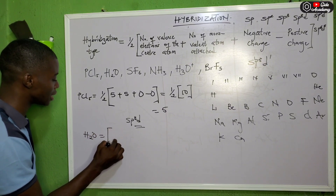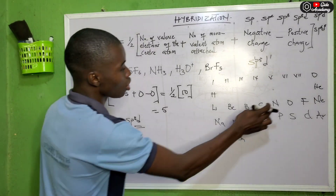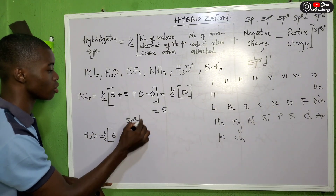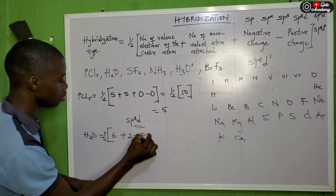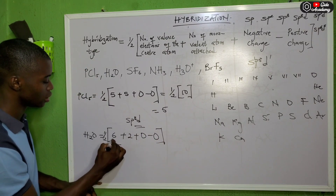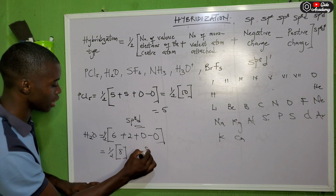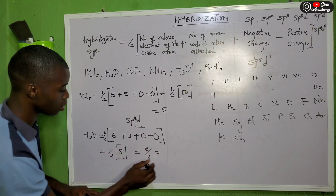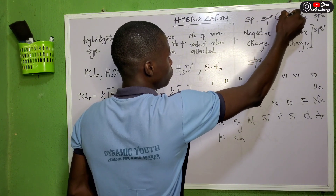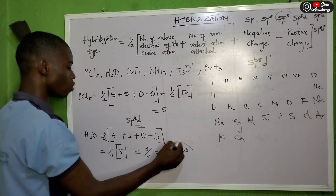Now let's try H2O. Oxygen is the center atom with 6 valence electrons. Two hydrogen atoms are attached. No charge. H = ½ × (6 + 2) = ½ × 8 = 4. Since sp3 accounts for 4 orbitals, water (H2O) is sp3 hybridized.